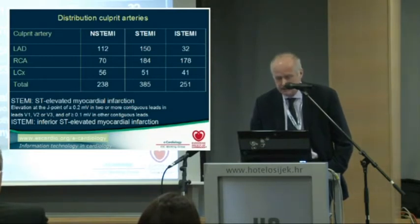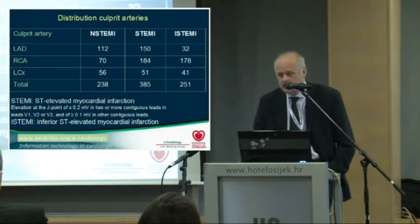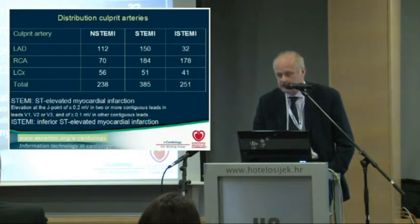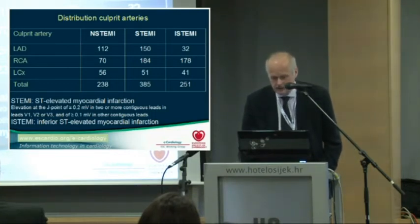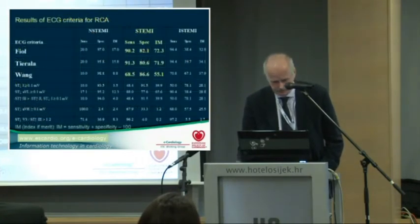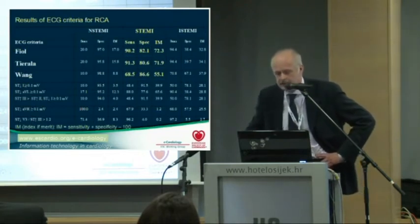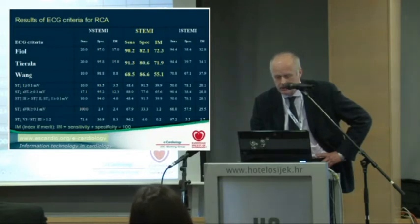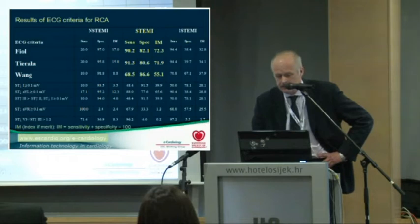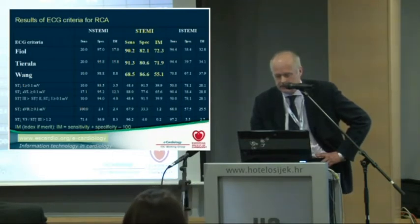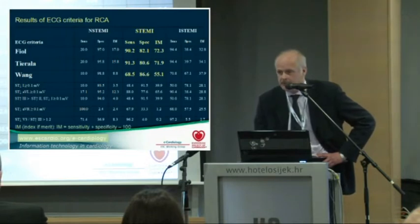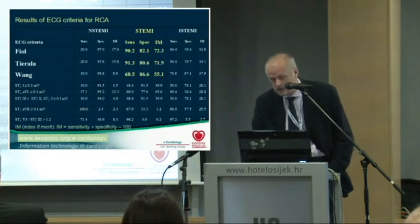We also made the subgroup I-STEMI — inferior STEMI patients — where I-STEMI patients have ST elevation in at least two of the three leads: II, III, and aVF. The results of the ECG criteria for I-STEMI show that the algorithms of Fiol from Barcelona and Tirelaan from Finland are very promising, with good sensitivity and specificity. We used a cut-off index of merit — sensitivity plus specificity minus 100 — of 60 for a reasonably acceptable performance. Fiol and Tirelaan performed fairly well for STEMI. However, looking at the non-STEMI data, performance is lower and decreasing.